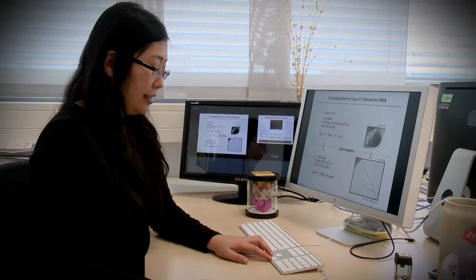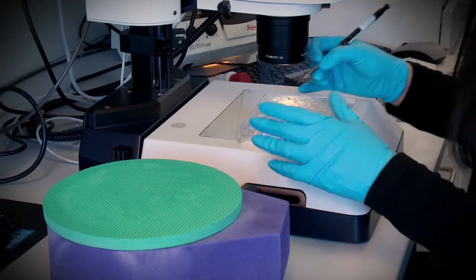Once they form crystals like this, we transfer them into loops, nylon loops, and here they're frozen at 100 Kelvin. And from that, we send to the synchrotron.